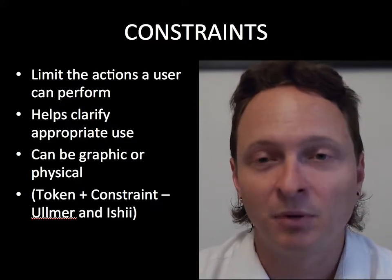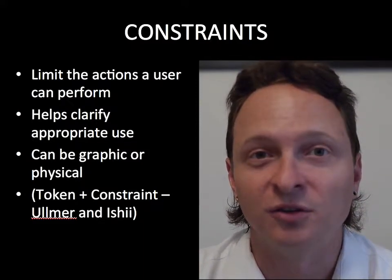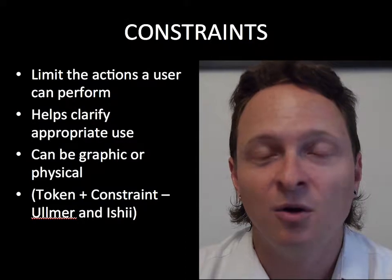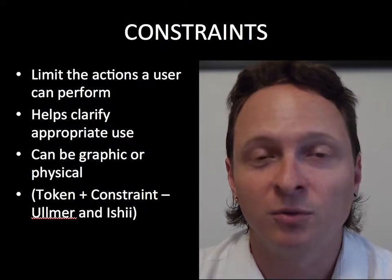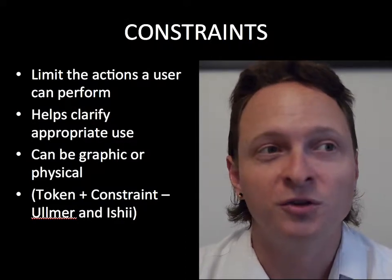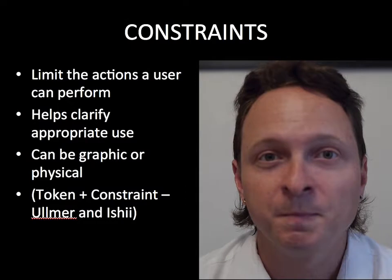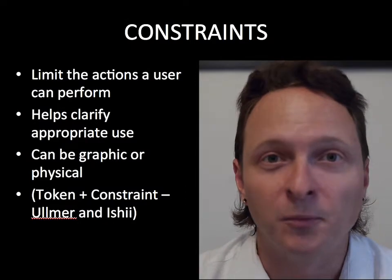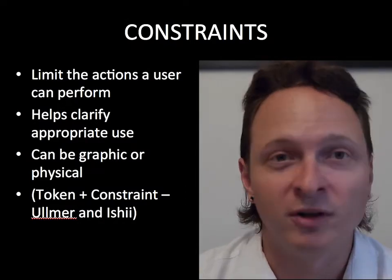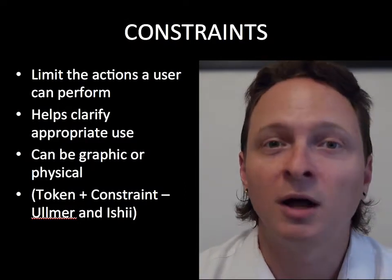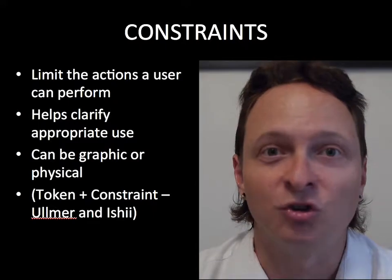An example of a constraint in the system: we're all familiar with computer software where we go to select an item from the menu and it's grayed out. We can't. We know it's available, but it's not something you can do right now. That's a constraint.